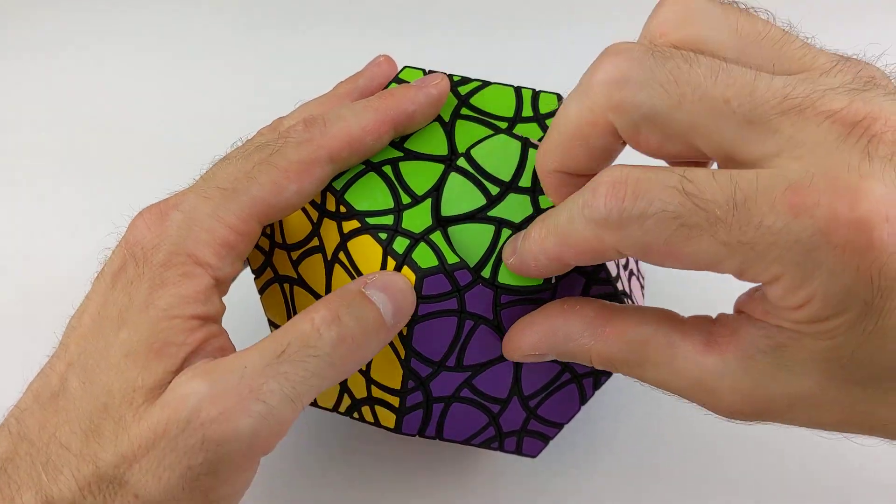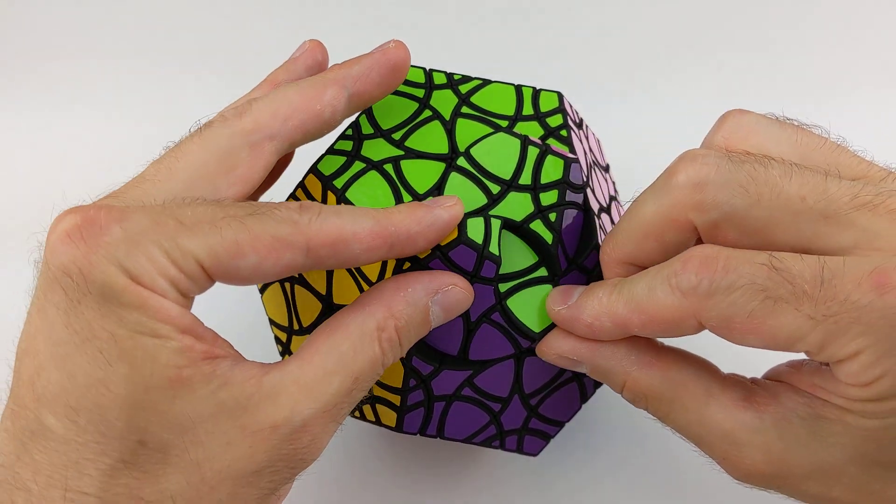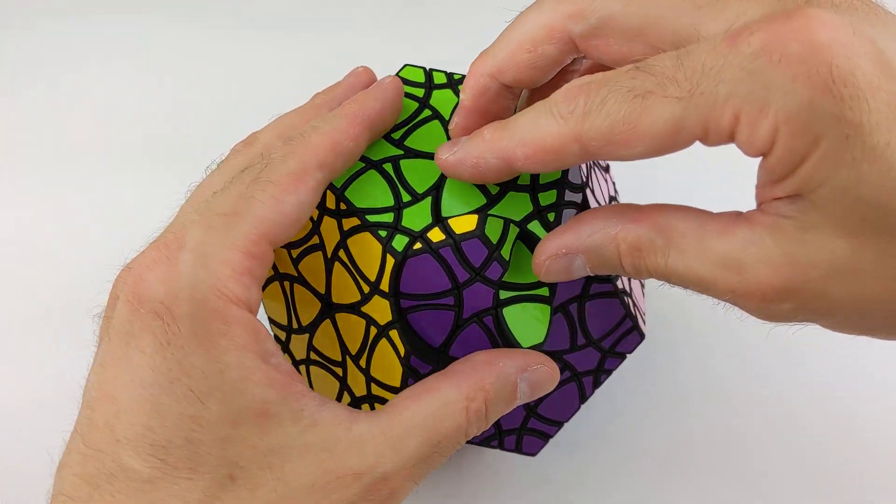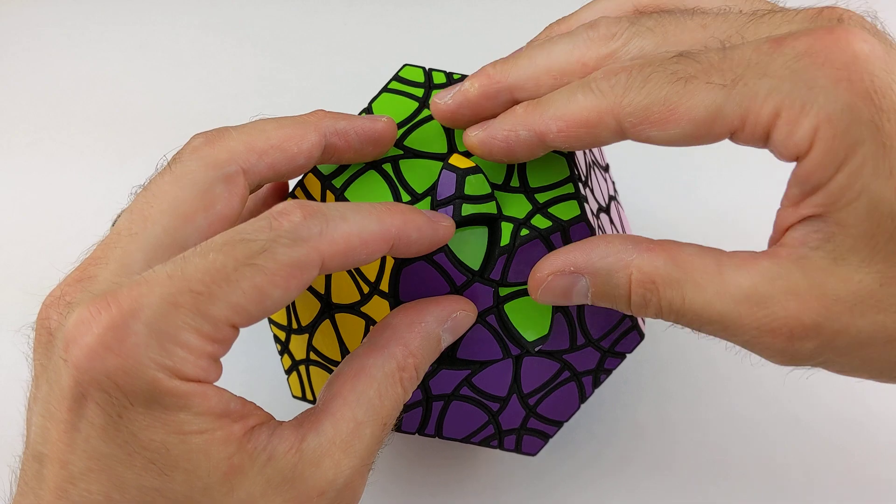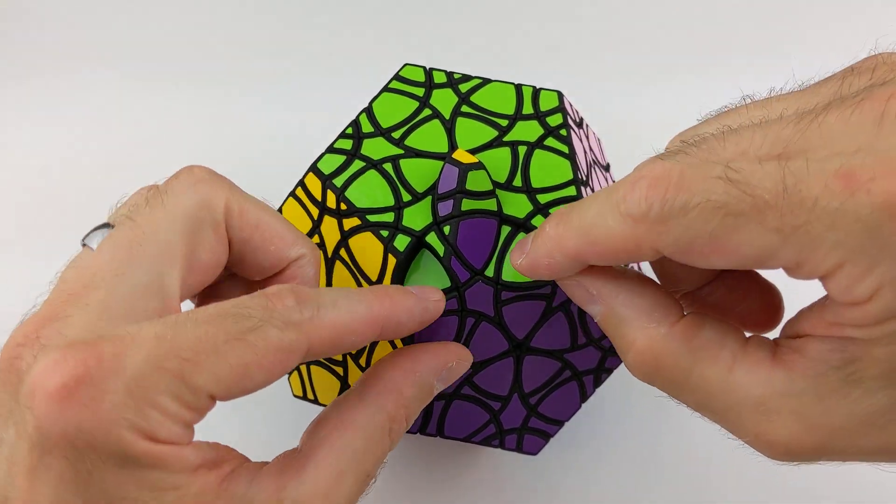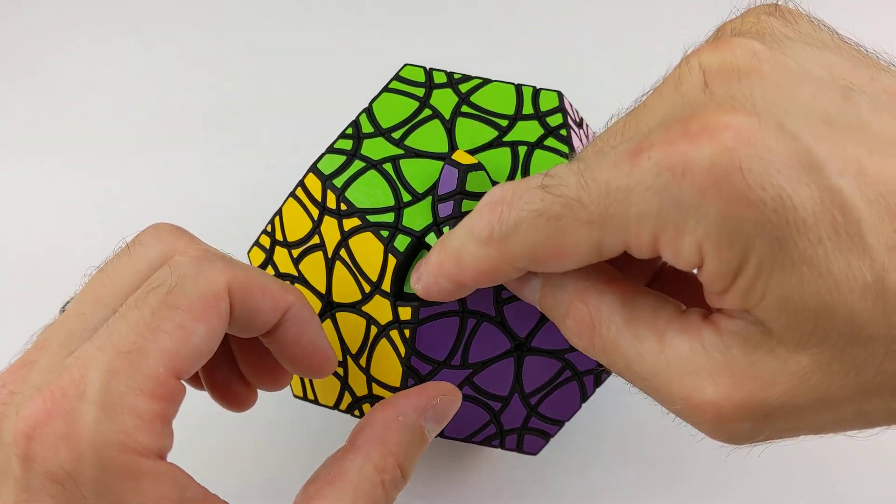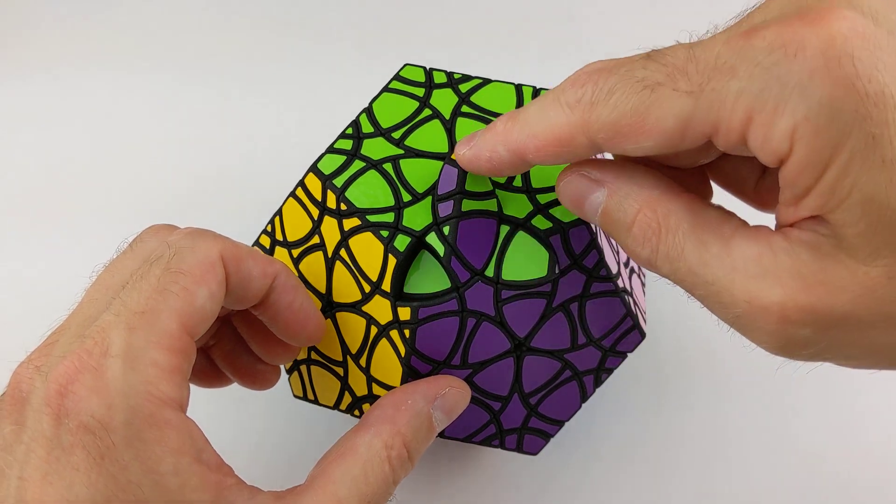Let's make a couple moves to demonstrate that property right now. Here we can see that this face piece came from here and exchanged places with that corner piece.